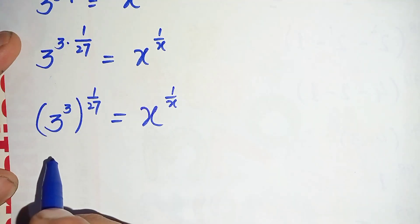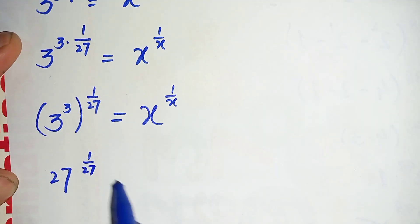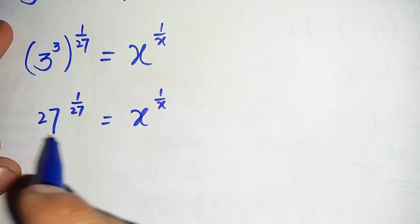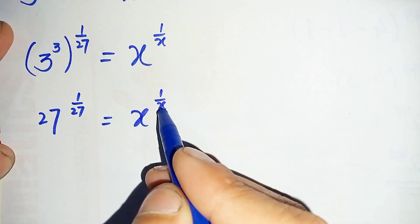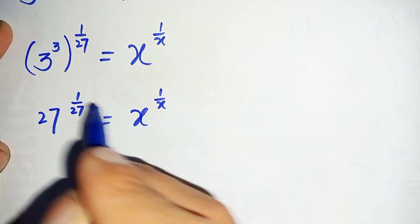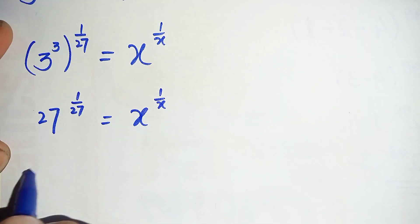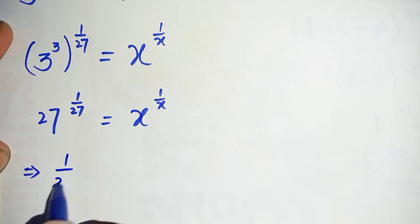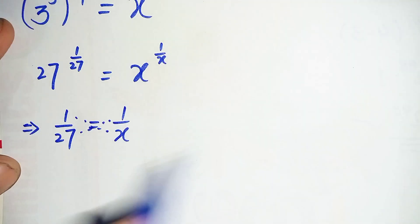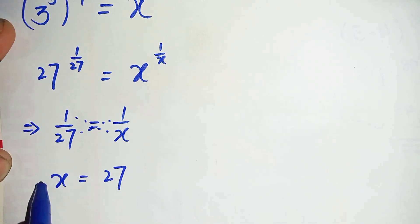Now 3 raised to power 3 is: 3 times 3 is 9, and 9 times 3 is 27, so it is 27 raised to power 1 over 27, is equal to x raised to power 1 over x. Now in both sides the bases are the same as the number in the denominator of the power, so we can compare both bases and powers. Comparing the powers: 1 over 27 equals 1 over x, and cross-multiplying gives x equals 27.